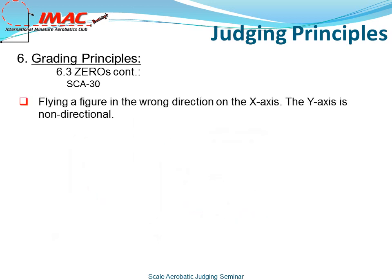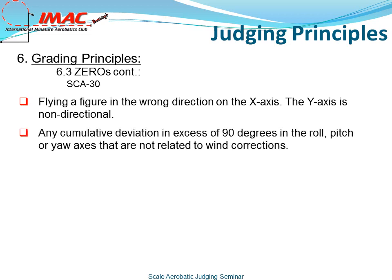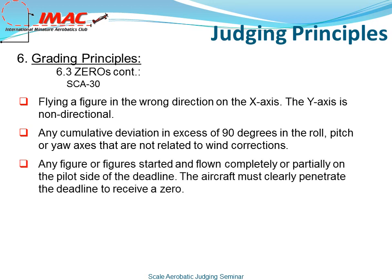Flying a figure in the wrong direction on the x-axis will result in a zero. The y-axis is non-directional. Any cumulative deviation in excess of 90 degrees in roll, pitch, or yaw axis that is not related to wind correction will result in a zero. Any figure started and flown completely or partially on the pilot side of the deadline — the aircraft must clearly penetrate the deadline — will receive a zero.